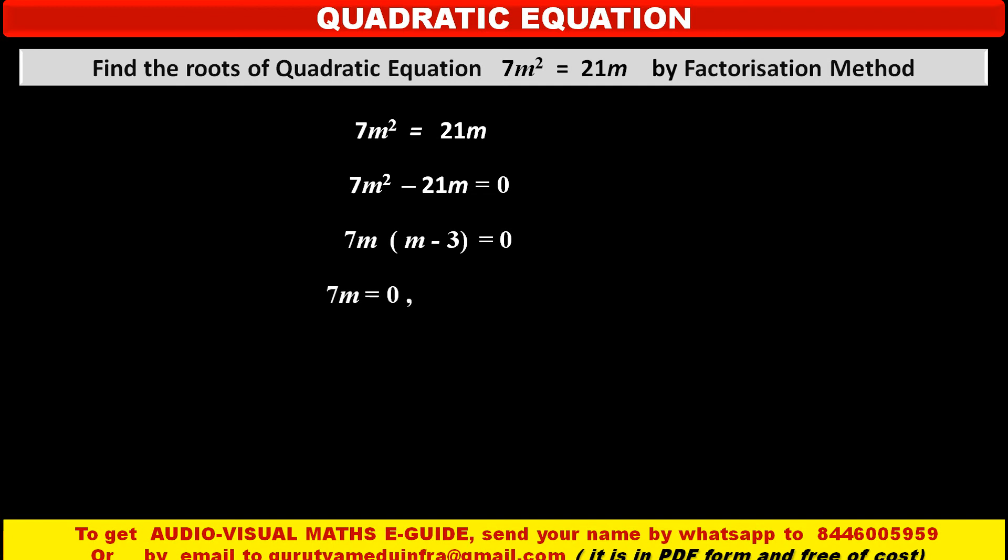So either the first factor, that means 7m = 0, or m - 3 = 0. Dividing both sides by 7, we get m = 0. Or in the second part, shifting minus 3 to the right hand side, we get m = 3.